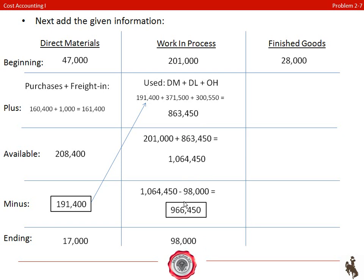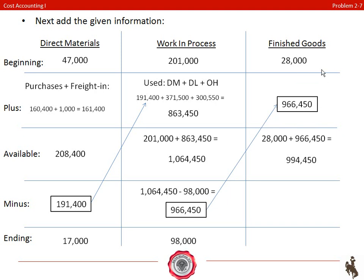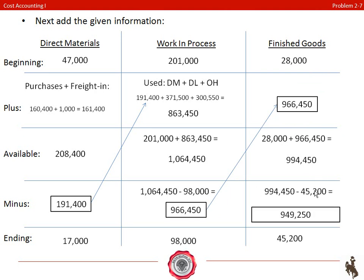We subtract our ending work in process of 98,000 from that, giving us 966,450 — this number represents our cost of goods manufactured, what we've manufactured this period, and it flows into our finished goods inventory. Adding that to our beginning finished goods inventory gives us 994,450. We then subtract out our ending finished goods inventory, giving us 949,250, which is our cost of goods sold.